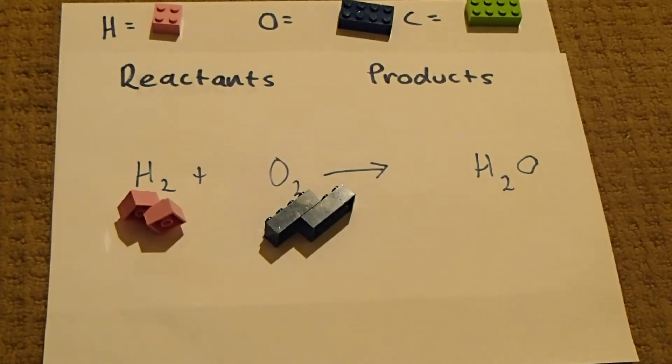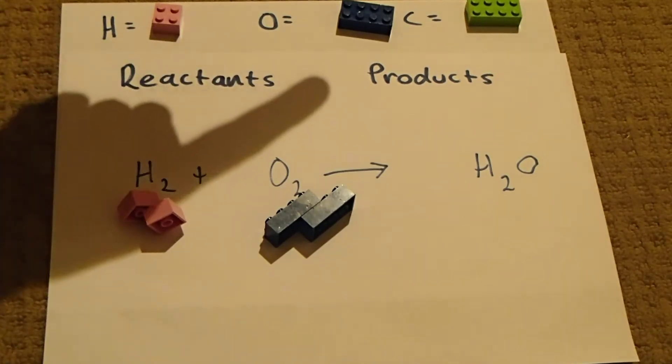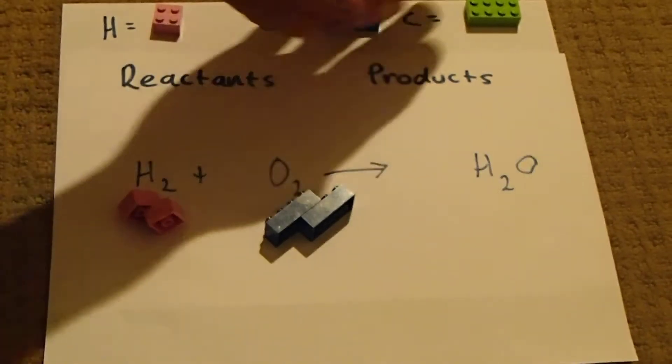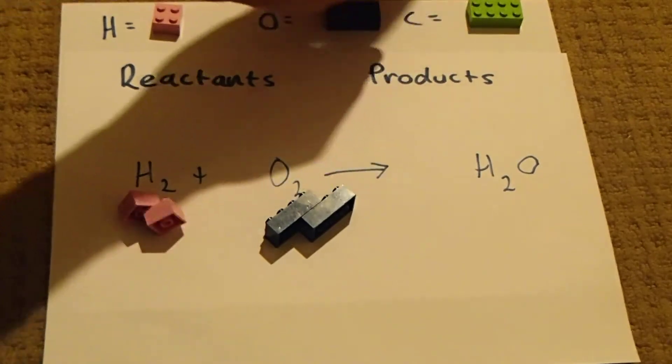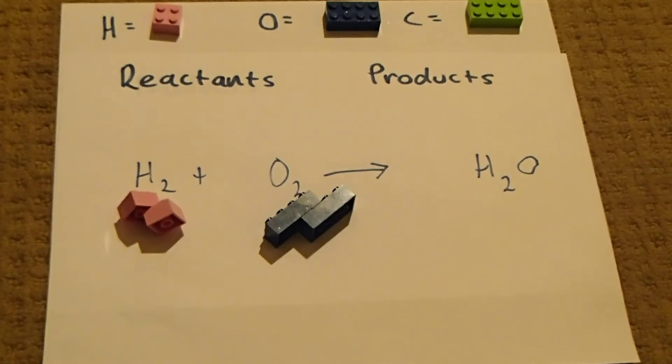First of all, you do the unbalanced reaction. And you see here that hydrogen is these small four-squared pink Lego blocks. Oxygen I've got is these bigger blue Lego blocks. Carbon isn't involved here yet, but carbon is my green big Lego blocks, and carbon is going to be in the next reaction.